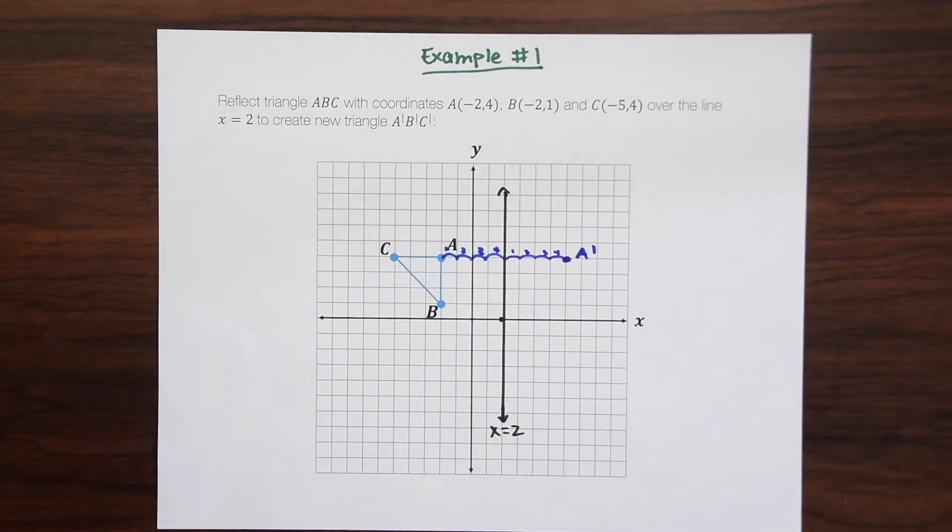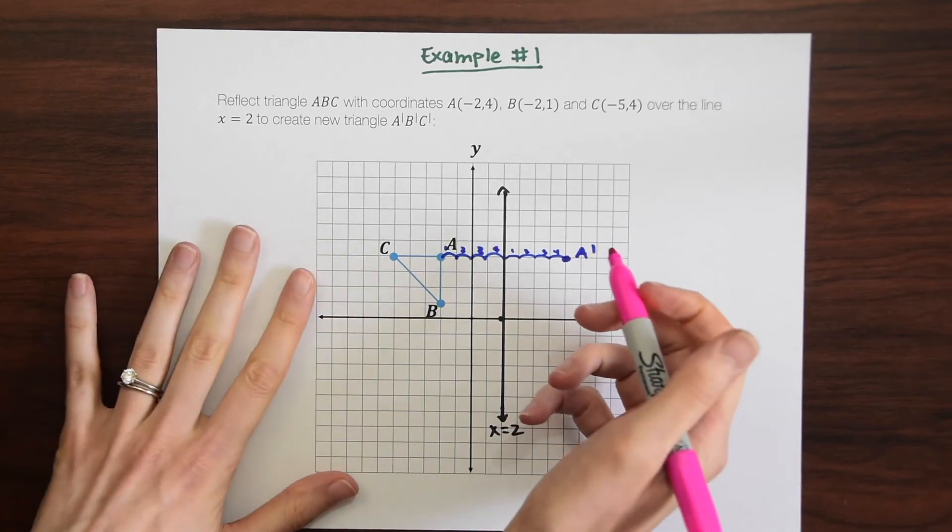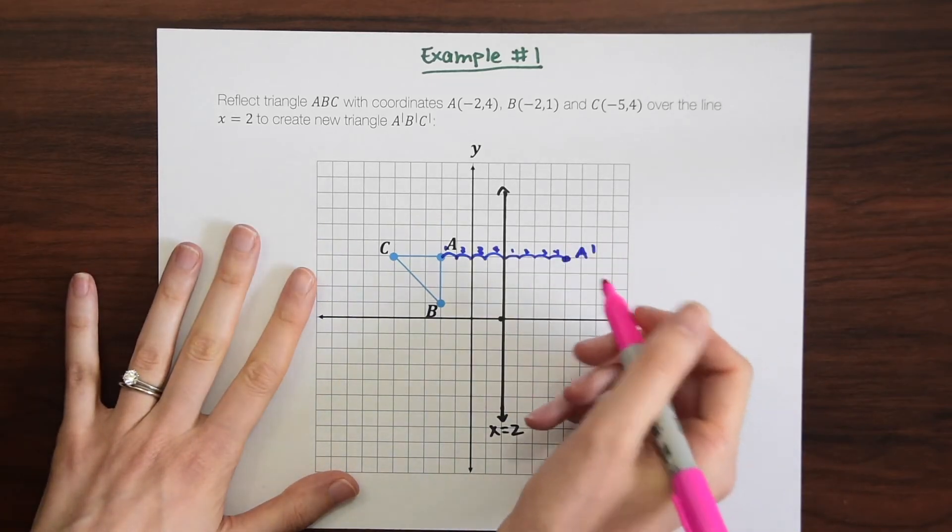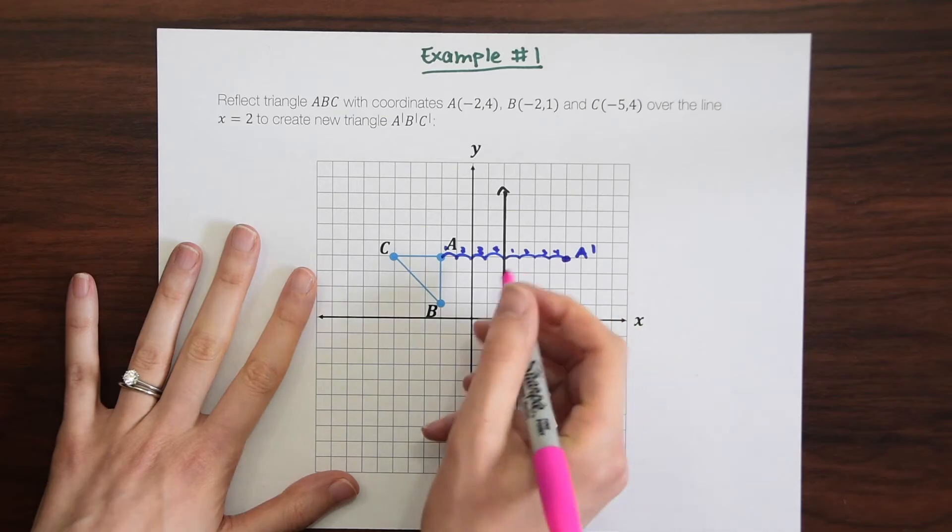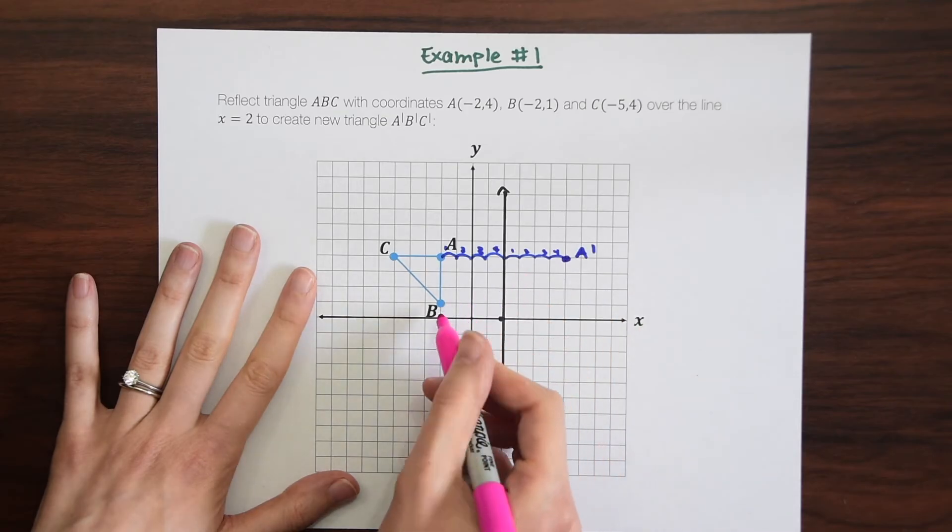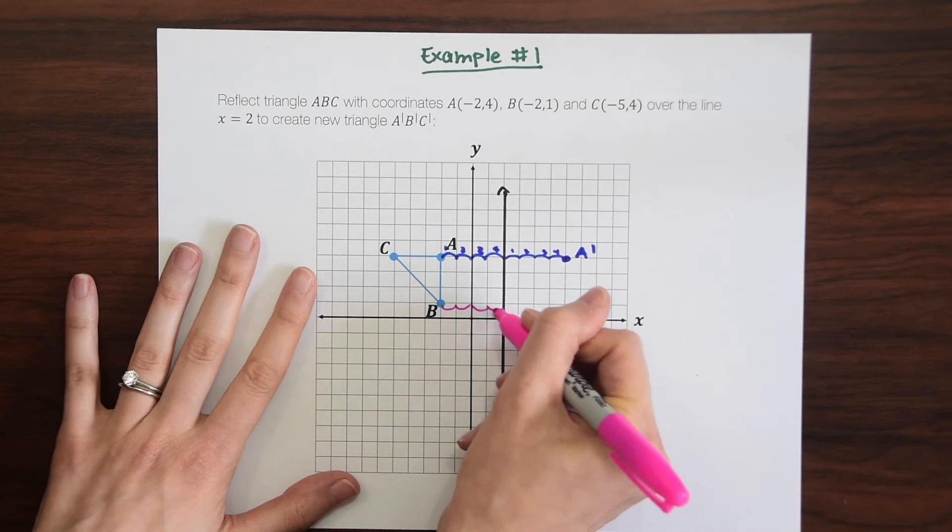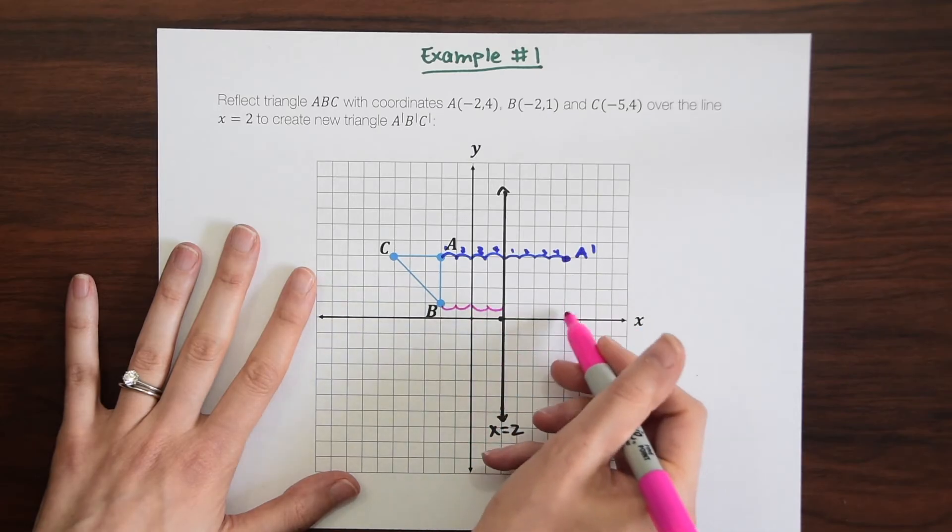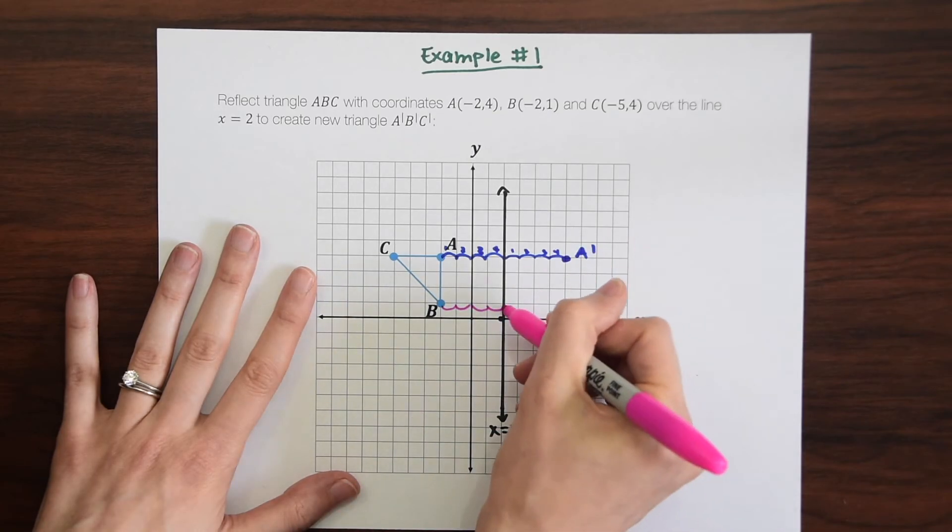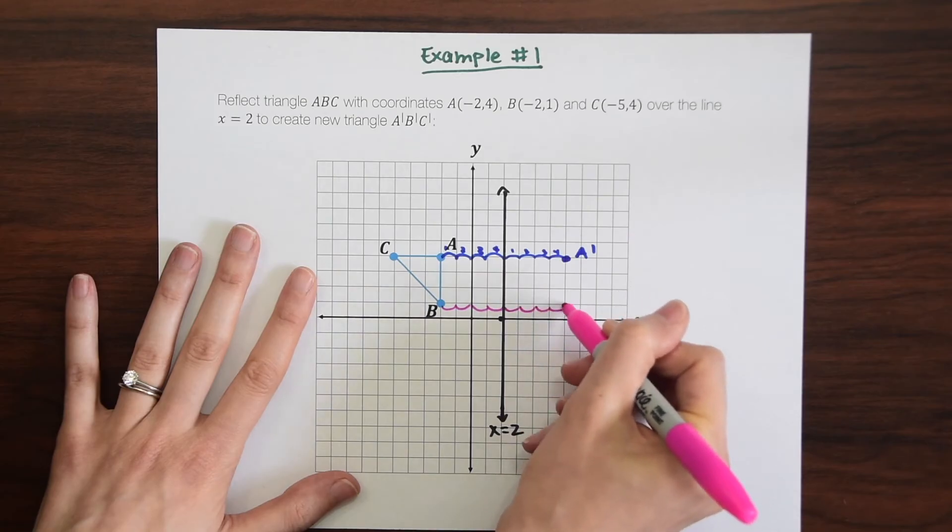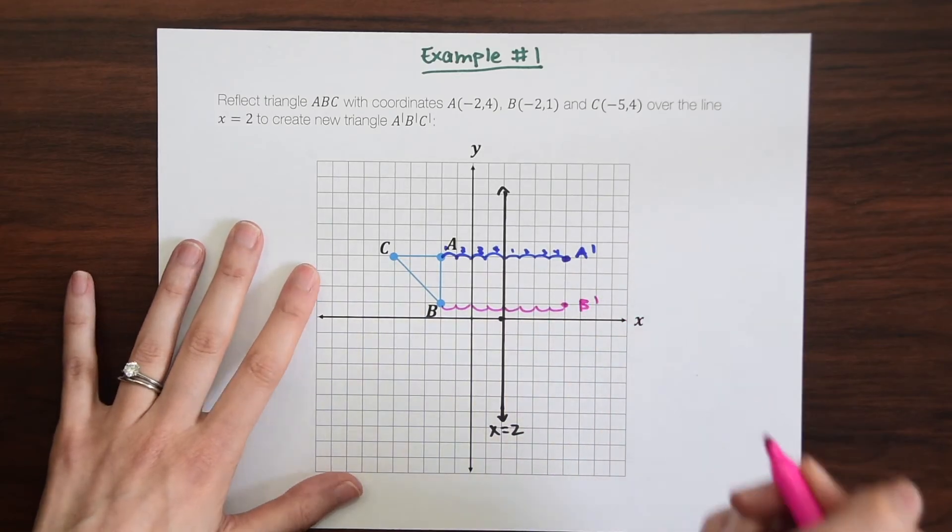So let's just do that with each point. So I'm just going to use different colors here so we can see easily what we're working with. So again, looking at point B, we are 4 units away from this line. 1, 2, 3, 4. And now we're just going to count 4 units to the other side of this line. 1, 2, 3, 4. And here we have our B prime.